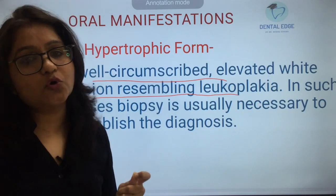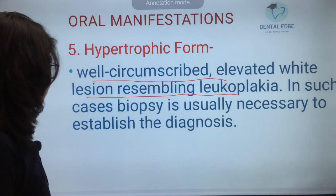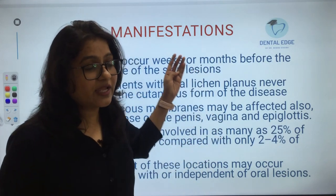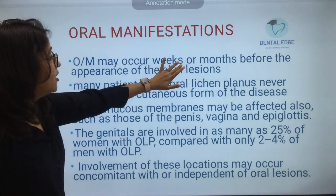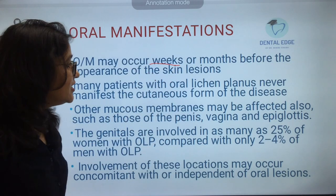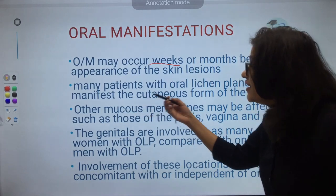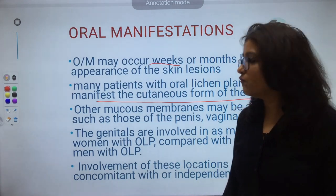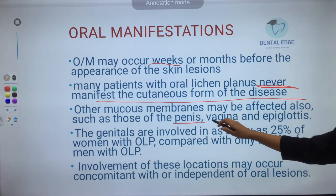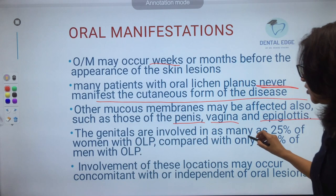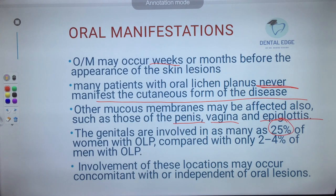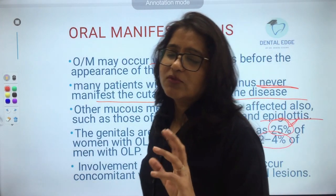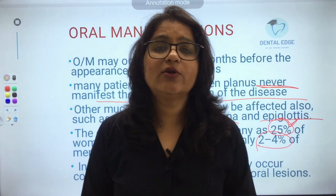The hypertrophic form presents as a well-circumscribed, elevated white lesion resembling leukoplakia; biopsy is required for diagnosis. These oral manifestations may occur weeks or months before the appearance of skin lesions, and many patients with oral lichen planus may never manifest the skin form. Other mucous membranes such as the penis, vagina, and epiglottis can also be involved — the genitals are involved in up to 25% of women and only 2–4% of men with oral lichen planus.